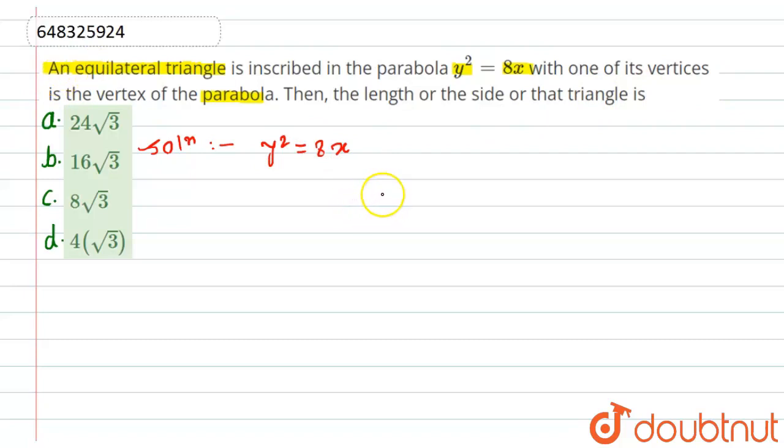First of all, if we compare the given parabola equation with general equation of y² = 4ax, so on comparing we get 4a = 8. This implies that a will be equal to how much? That is 2. So here we got the value of a is equal to 2.